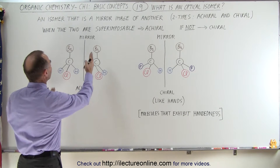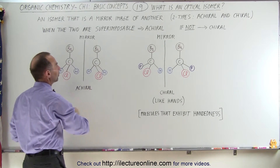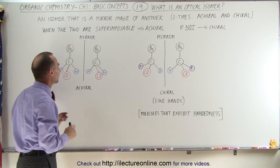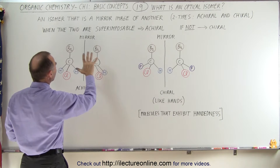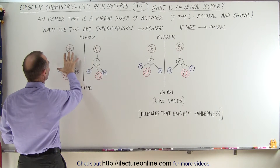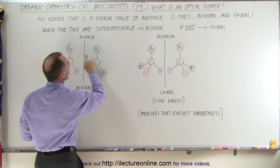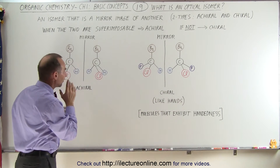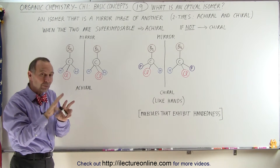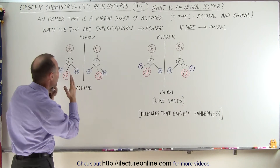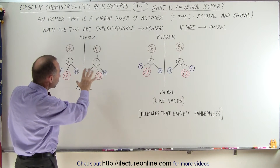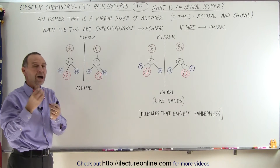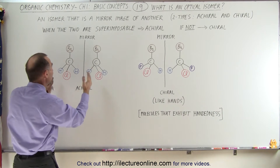Notice that in each case, this is the mirror image of this molecule, and this is a mirror image of that molecule, but there's a difference between the two. I can take this molecule and superimpose it onto this molecule. When that's possible, they're called achiral. In other words, in a sense they are the same molecule, but one is the mirror image of the other. So there's structurally really no difference between these two molecules, and they're called optical isomers only because one is the mirror image of the other.